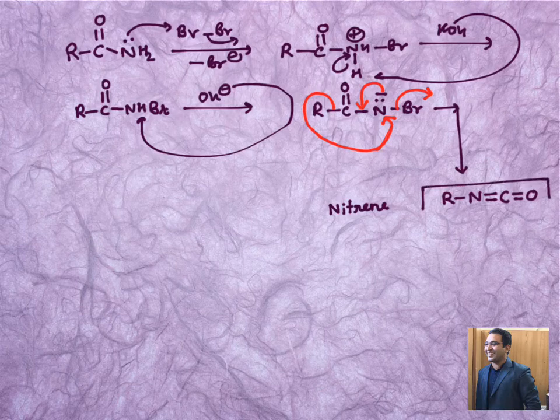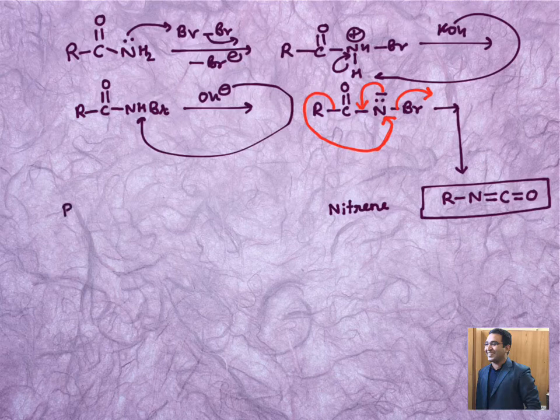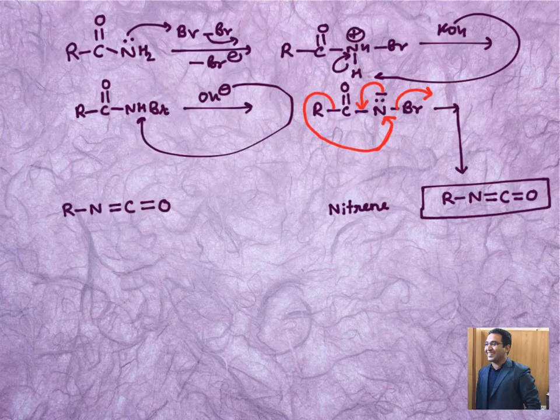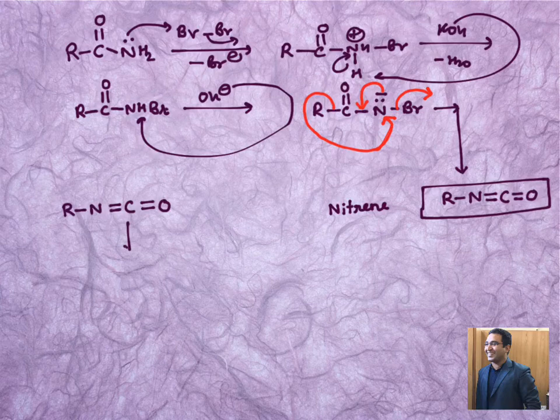When Br minus leaves as a leaving group, we can expect formation of R-N-C-O. This R-N-C-O when attacked with—see here in the previous step we have shown that OH minus takes H plus so it releases water. When it is reacted with water or in basic medium, what we can expect?